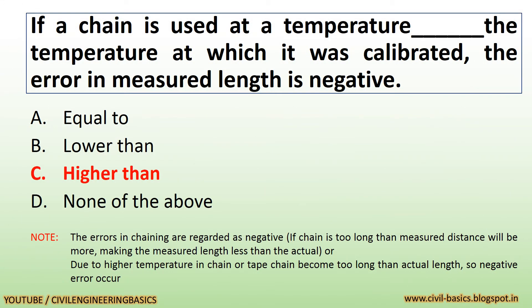If a chain is used at a temperature higher than the temperature at which it was calibrated, the error in measured length is negative.